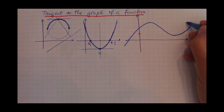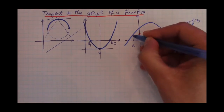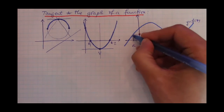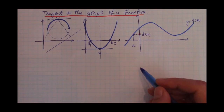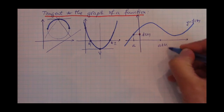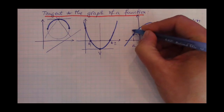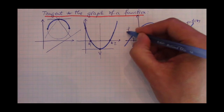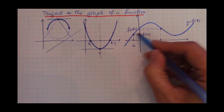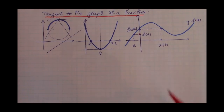In the meantime, let's look at a more generic type of function — say this is the graph of a function y equals f of x. Let's take a point a on the x-axis, giving us the point (a, f(a)) on the graph. Now let's take another point on the x-axis, call it a plus h, giving us the point (a+h, f(a+h)) on the graph.